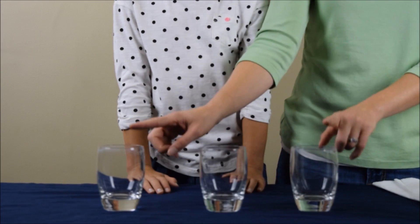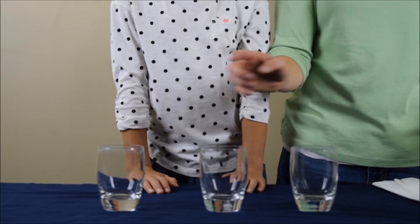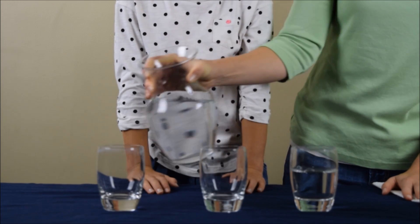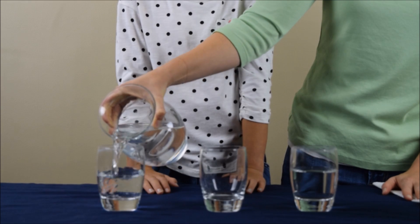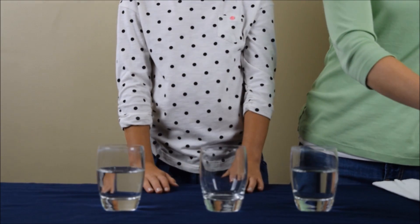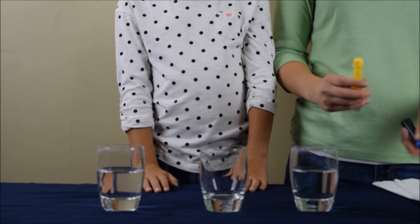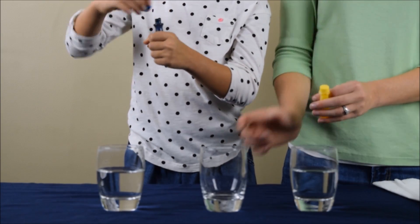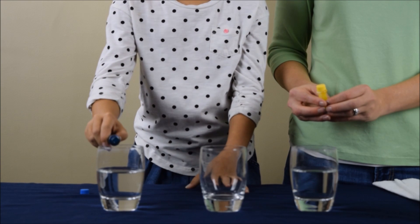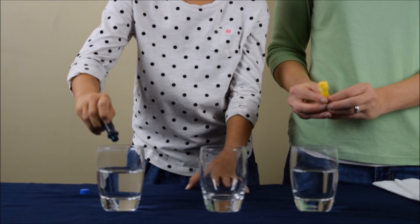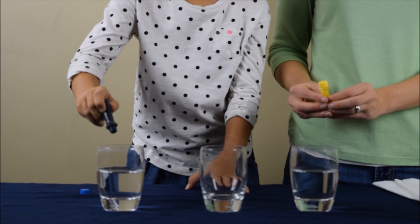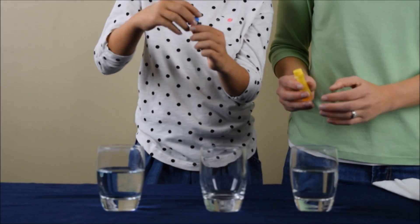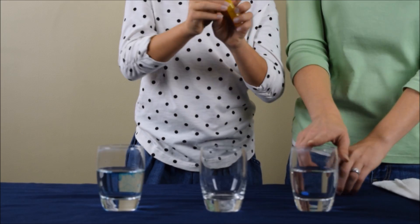And now at this point we are going to fill the outside glasses about halfway full with water. That one and now this outside one. So now that we have the water in the glasses, we are going to dye the water with some food coloring. We are going to use some blue food coloring for this glass and yellow food coloring for this glass.